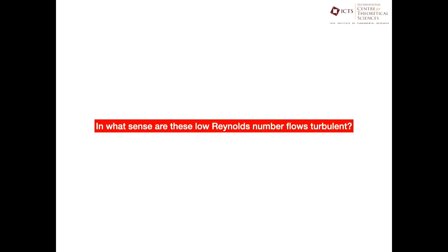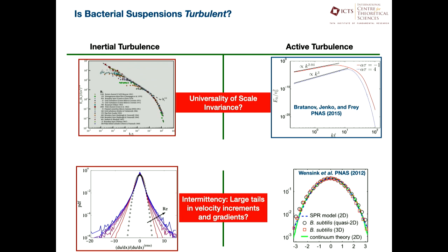Let's begin with the first question: in what sense are these low Reynolds number flows turbulent? When I talk about turbulence, I will focus on two aspects. The first is scale invariance and universality. In high Reynolds turbulence, independent of what sort of fluid you use or experimental apparatus you have, one sees a certain universality in how kinetic energy is distributed across Fourier modes — the energy spectrum — with the famous Kolmogorov prediction. In 2D, there is an analogous result which says you always have a K minus five-thirds spectrum.